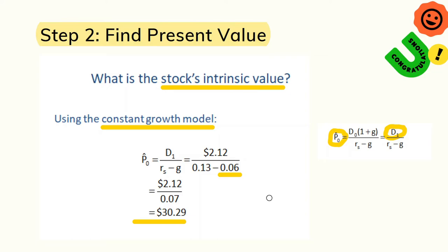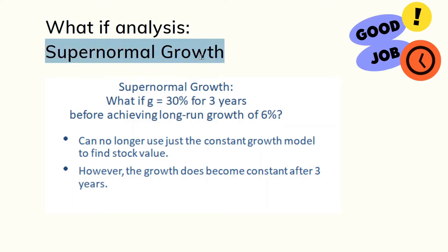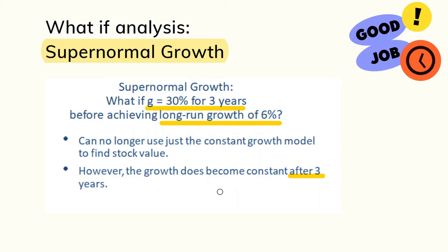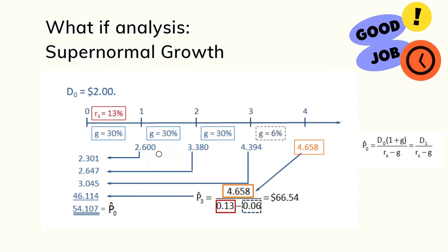The second example shows a supernormal growth period. For the first three years the firm grows very fast — assumed at 30 percent per year — and after that the business achieves a long-run growth rate of 6 percent. We can apply the constant growth model after year three, but prior to that we must calculate dividends D1, D2, and D3 individually. A timeline from time zero through year four is drawn; year three is when the firm achieves the long-run constant growth rate of 6 percent forever.